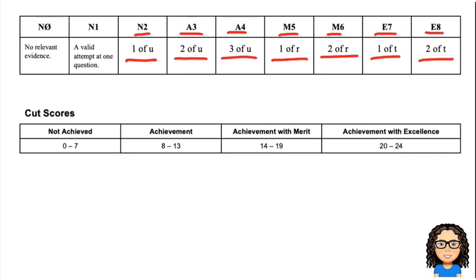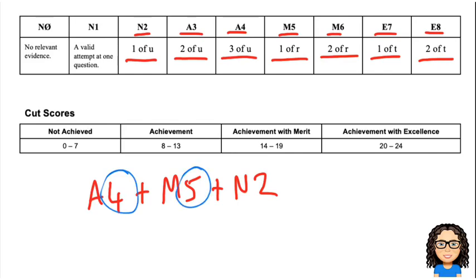Then you're going to put all three question marks together. So for example, say I got a mark in question one of A4. Question two, I got a mark of M5. And question three, I got a mark of N2. What I'm going to do now is I'm going to take each of those, the numbers, 4 plus 5 plus 2. That's going to give me a value of 9.